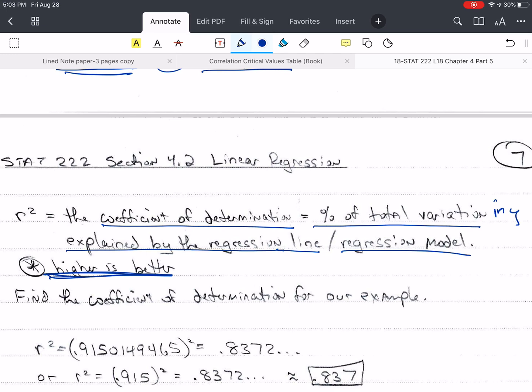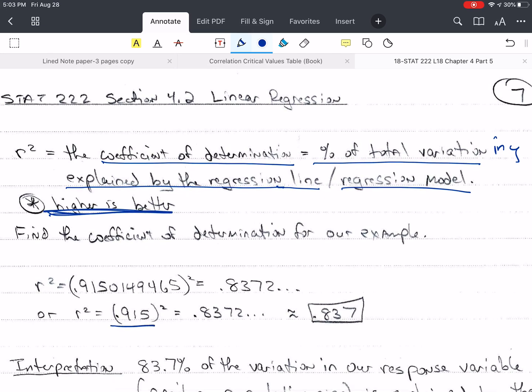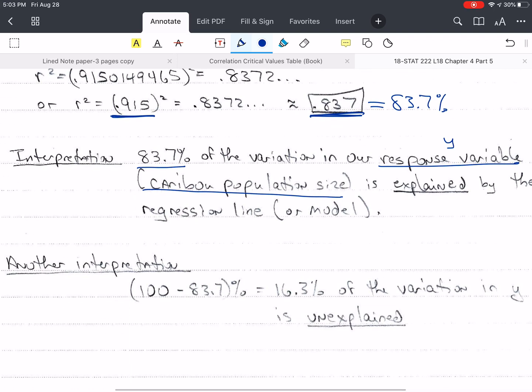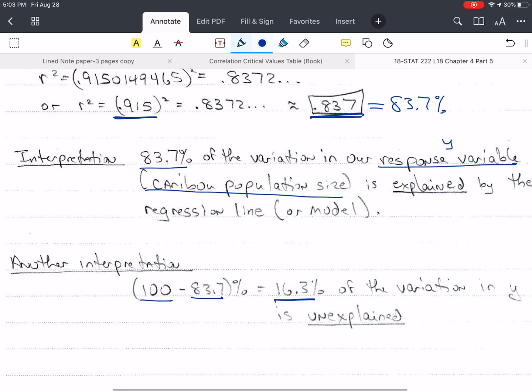We want to find the coefficient of determination for our sample. It's okay to round r here and square it. It won't be very different to three decimal places, and we only care about three decimal places. In either case, we get 0.837, which means 83.7% of the variation in our response variable y, the caribou population size, is explained by the regression line or regression model. So that's the interpretation. Another interpretation is how much is unexplained. We take this explained amount from 100 percent and get 16.3% of the variation in y is unexplained.